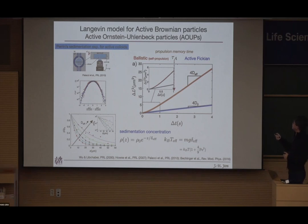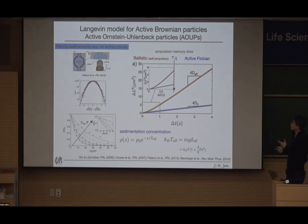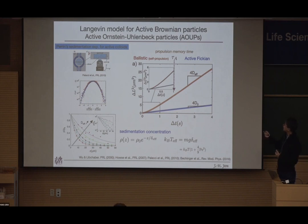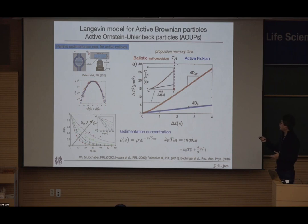The diffusion constant here is not related to the Einstein relation because most of this motion comes from chemical energy. The displacement of this active particle has Fickian dynamics, and the displacement looks Gaussian at long time. So it has Gaussian and Fickian behavior, and people call this Brownian but active — that's the meaning of active Brownian particle.